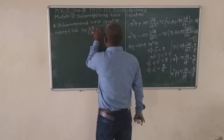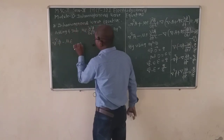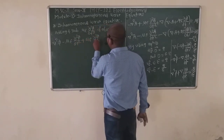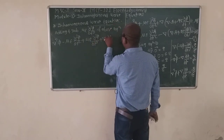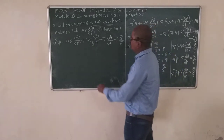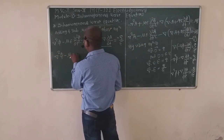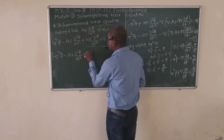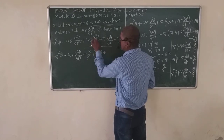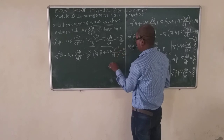Expanding: minus del squared phi minus del dot (dA/dt) equals rho/epsilon. Multiplying throughout by negative: del squared phi plus del dot (dA/dt) equals minus rho/epsilon. To obtain the wave equation form, we add and subtract the term mu*epsilon*(d²phi/dt²) to the above equation.